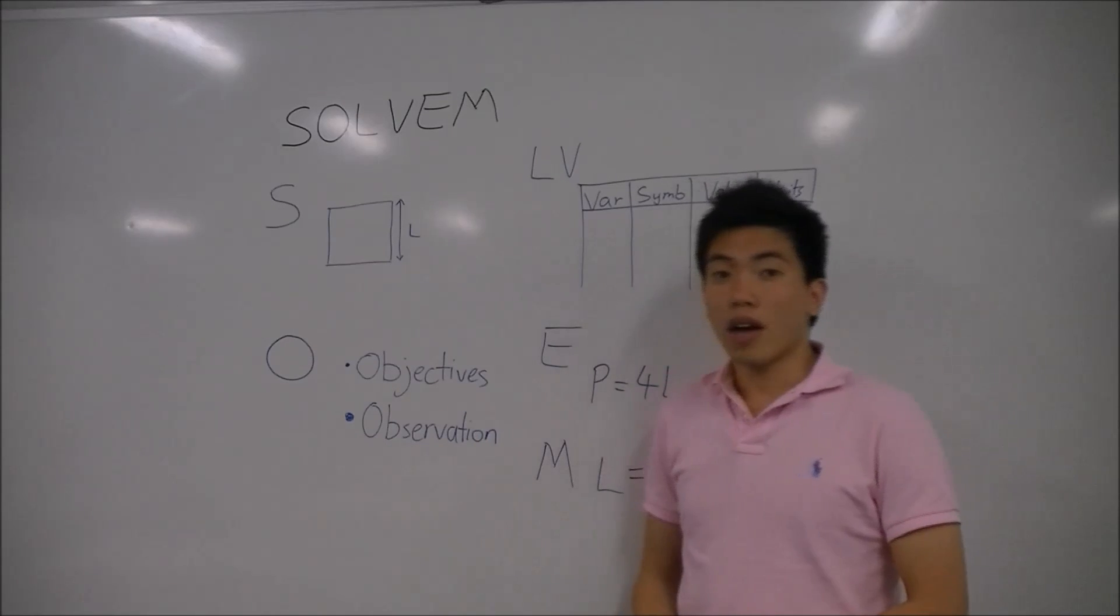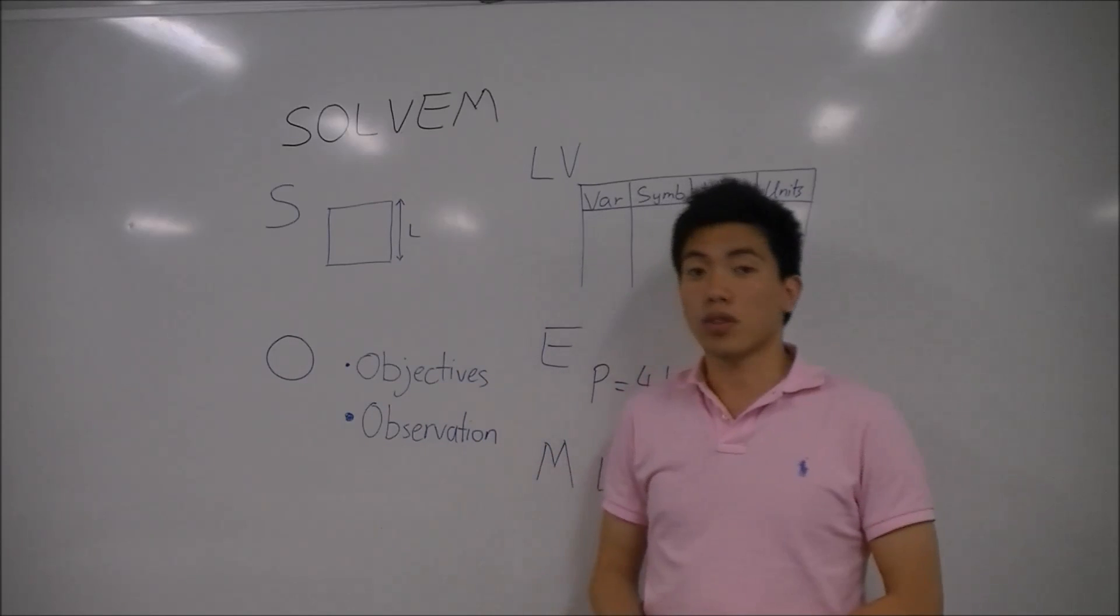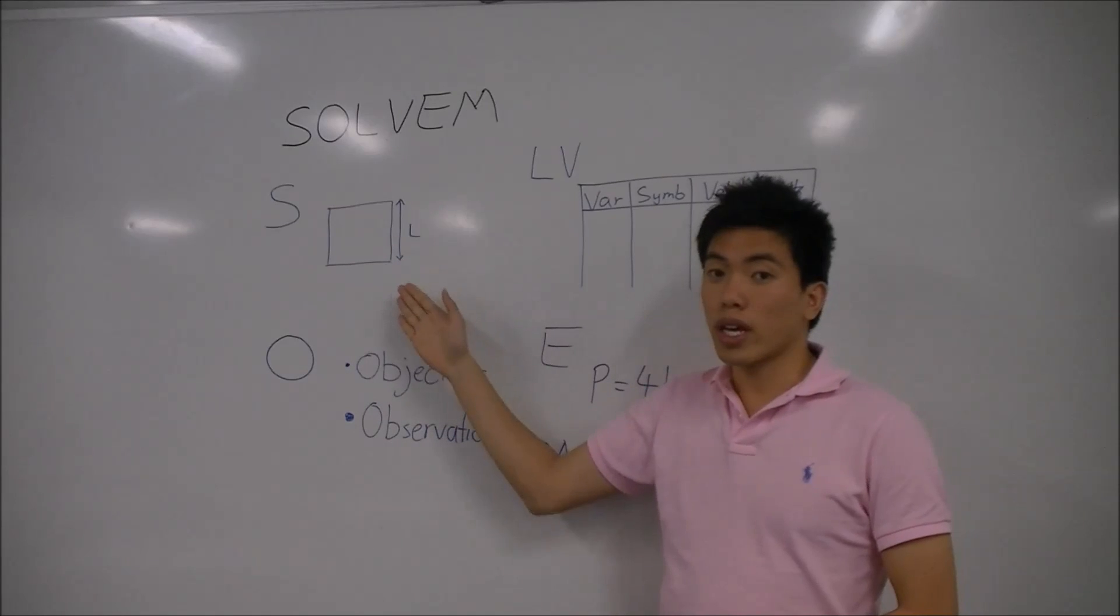In my example here, I've got a square, and I'm trying to find the length of one side of my square. So, for my S sketch, I've drawn my square, and I've labelled everything I know about that square on my diagram.